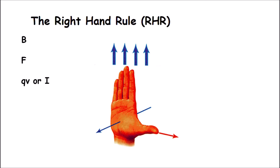Here comes the difficult part. If you notice this hand, it's your right hand — don't use your left hand. We call it the right-hand rule for a reason, and it's because we use our right hand in order to determine the direction of the force. Let's take a look at how we go about that.